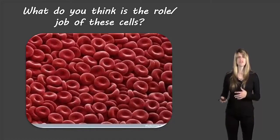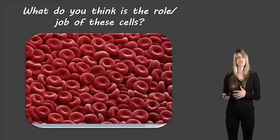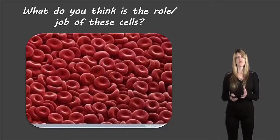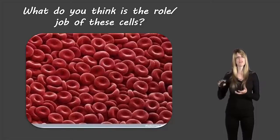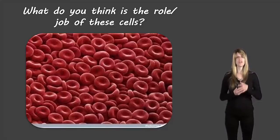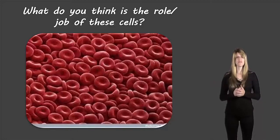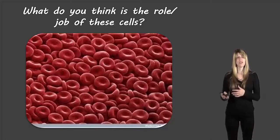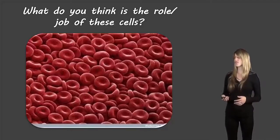If we take a look at these cells here, we should be able to recognize these as red blood cells. They have a very specific shape that helps them do their job — they're very round, very smooth, and very flexible. This allows them to move through the blood vessels without any trouble. If they had sharp, spiky bits pointing out of them, they would get stuck in the blood vessels. So they have a very good shape and size for what they need to do.